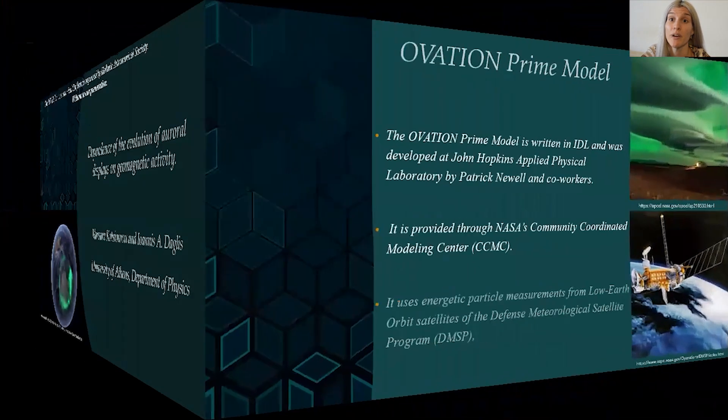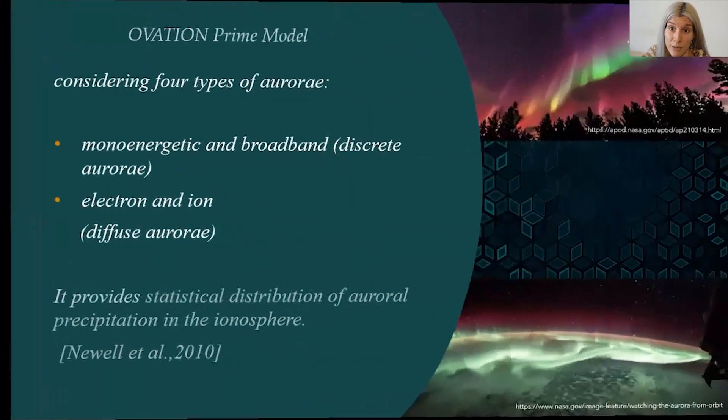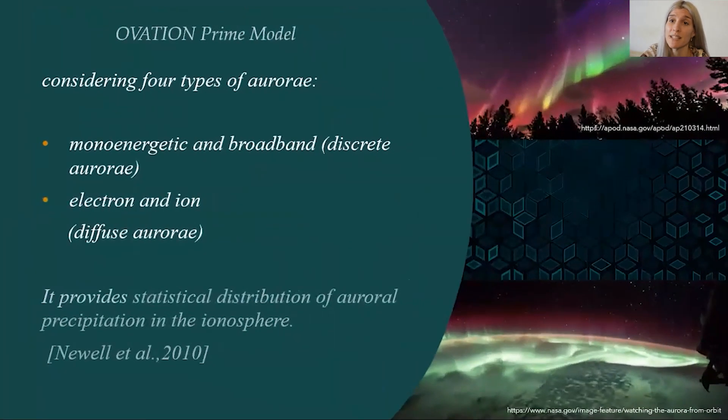In our study, we have utilized the OVATION Prime model which uses energetic particle measurements from low-earth orbit satellites of the Defense Meteorological Satellite Program, considering four types of aurora, and provides statistical distribution of aurora precipitation in the ionosphere.